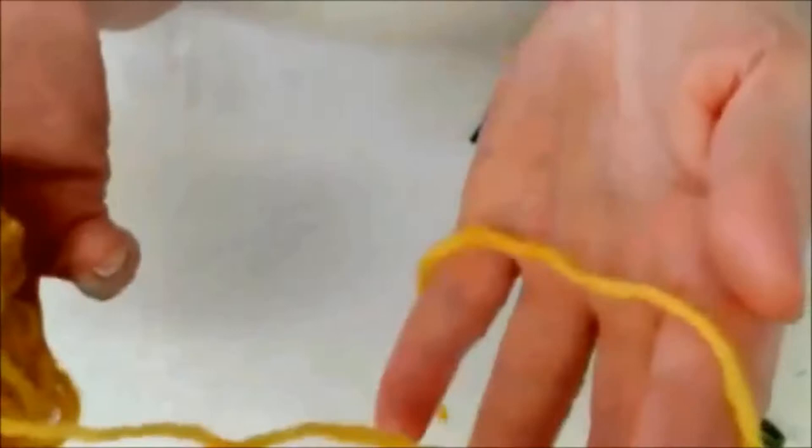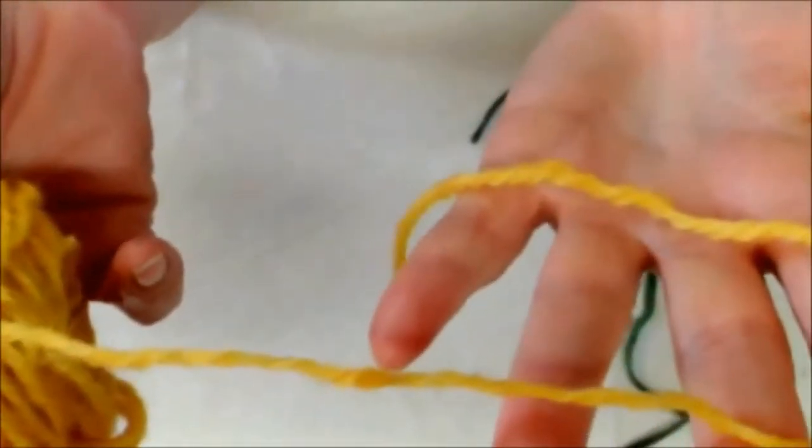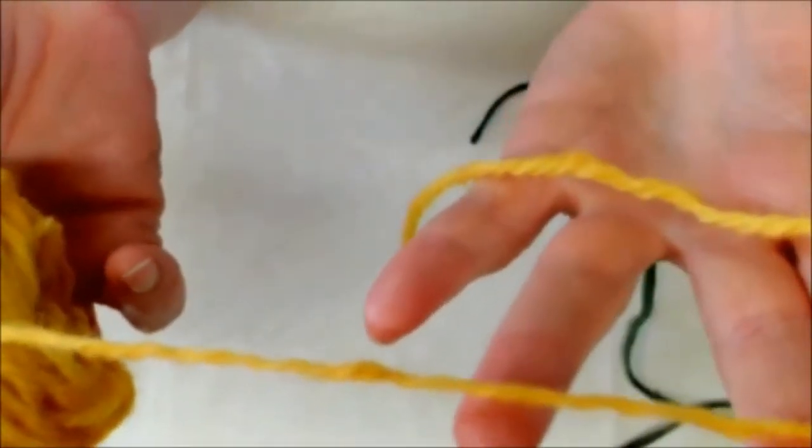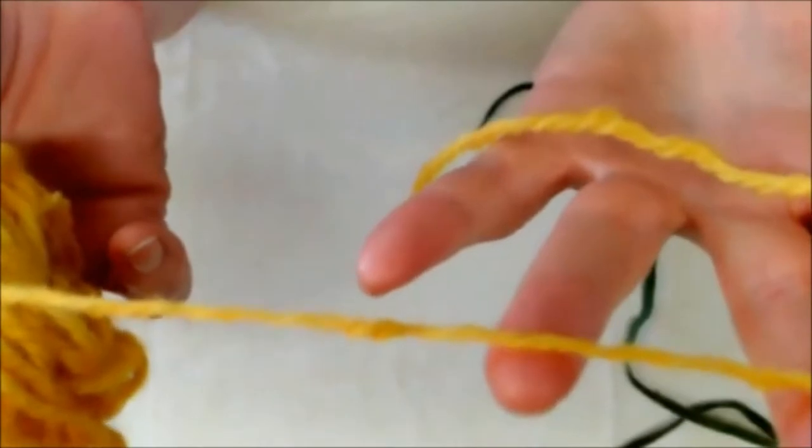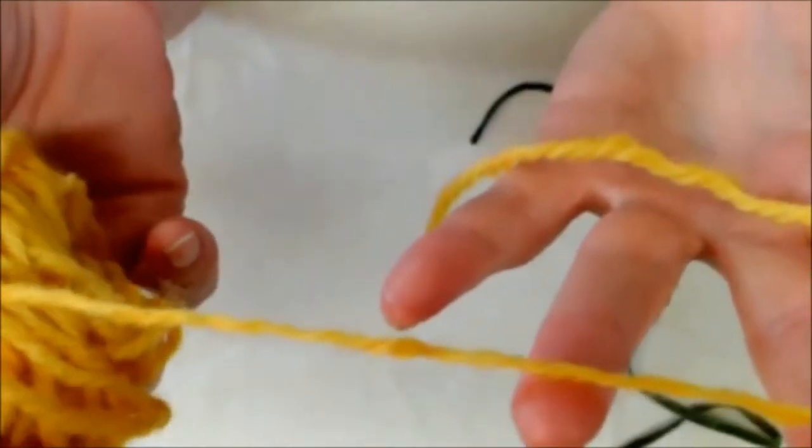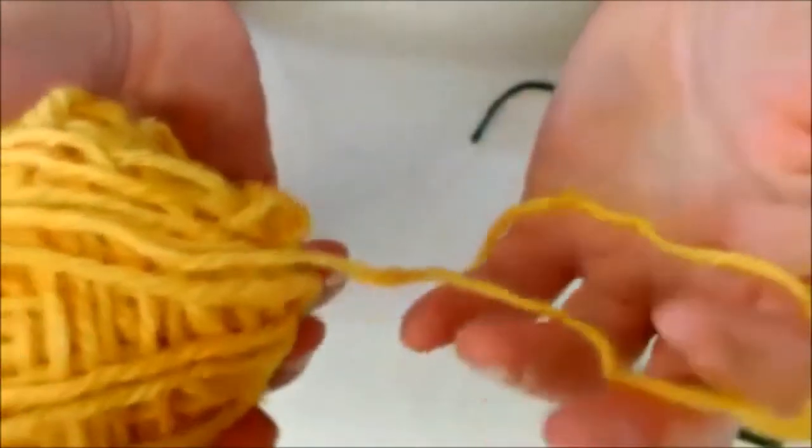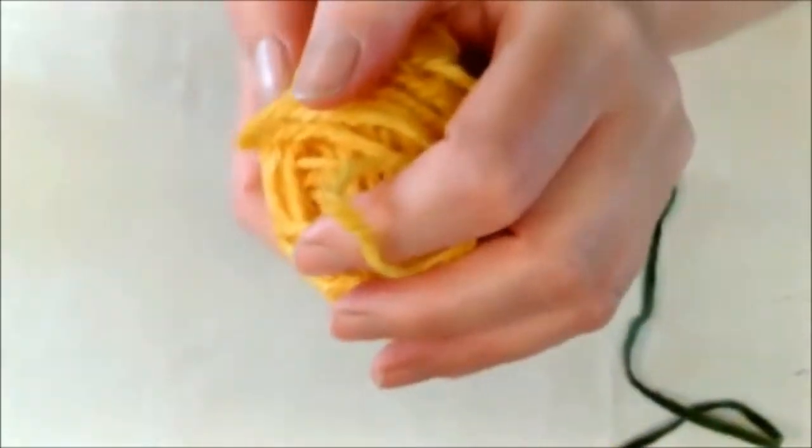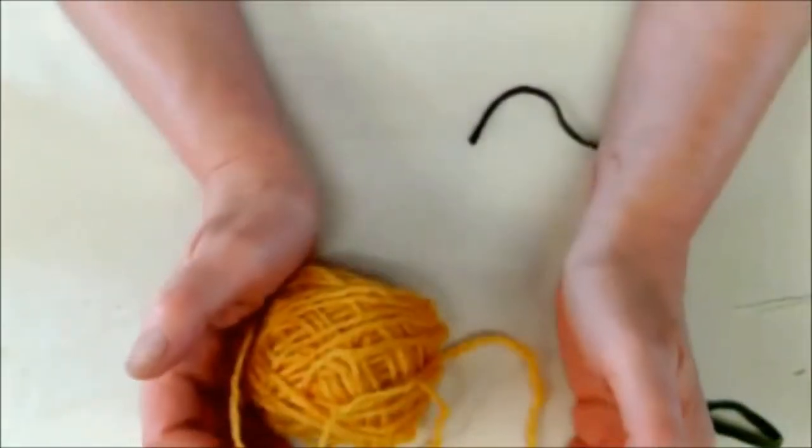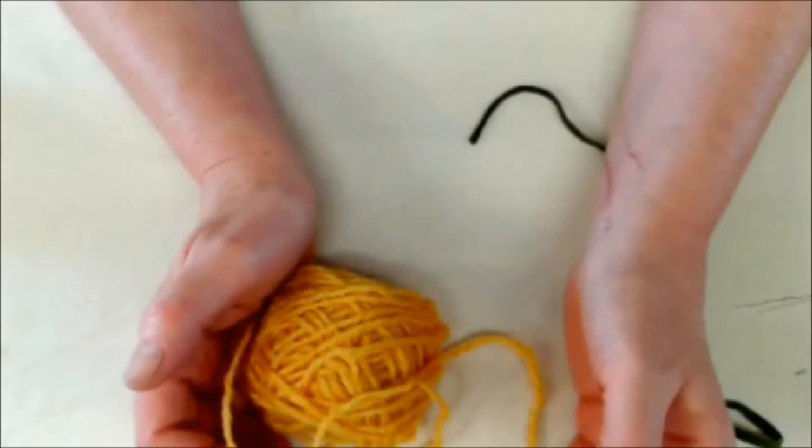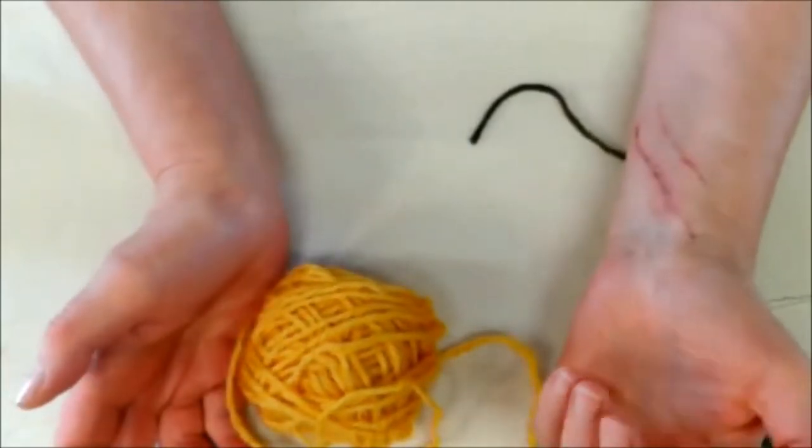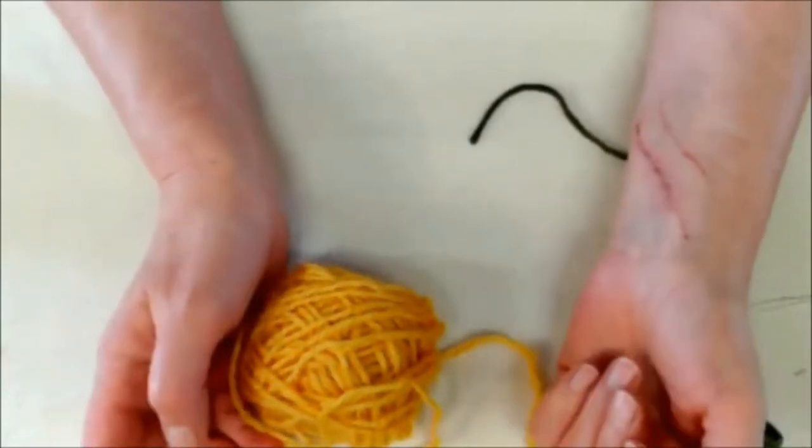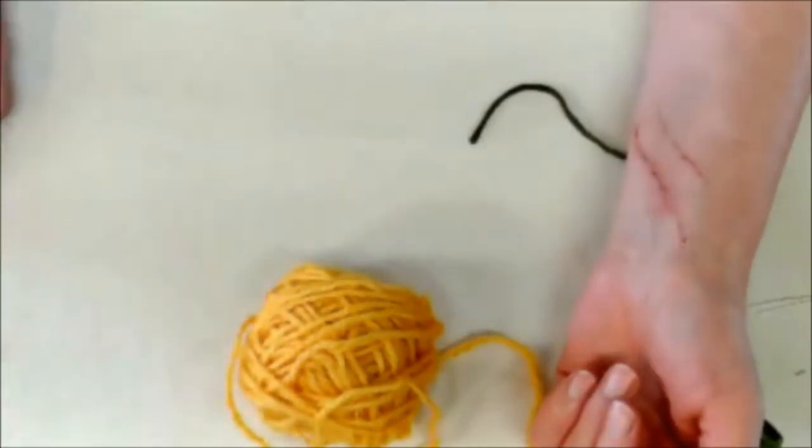You can also certainly hook with yarn. Nothing wrong with hooking with yarn. This is a worsted weight, but you can use a larger or heavier weight yarn if you wish. And people are also very creative and hook with everything from pantyhose, t-shirts, silk ribbons, strips of velvet, basically anything that you can pull through your fabric with your hook.